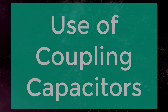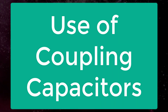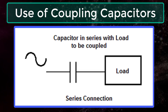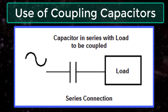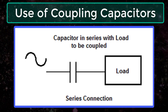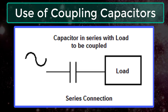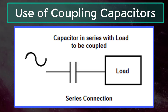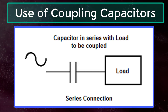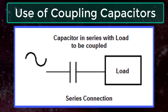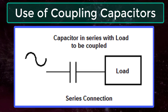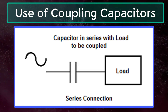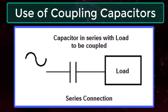Coupling capacitors are useful in many types of circuits where AC signals are the desired output signals, while DC signals are used only for providing power to certain components in the circuit and should not appear in the output.